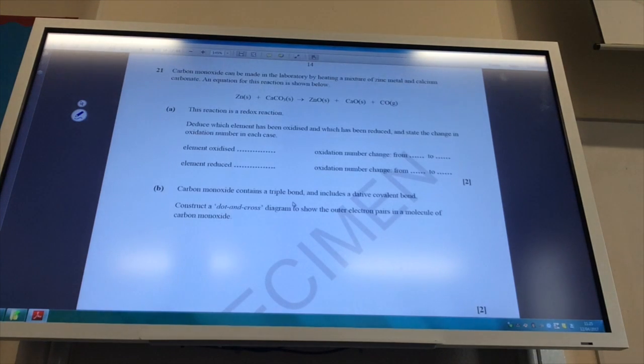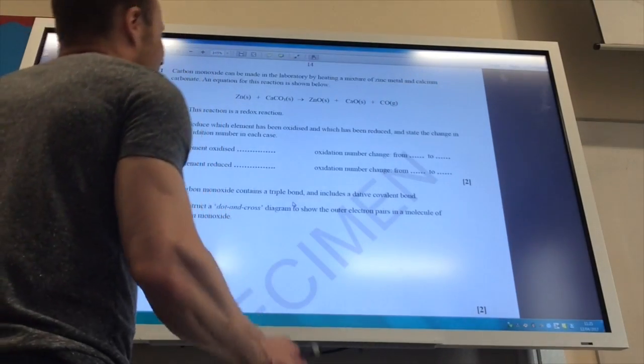Okay, carbon monoxide can be made in the lab by heating zinc and calcium carbonate, giving you a nice equation for that. It's redox. Which element has been oxidized, which has been reduced? So let's have a look at this.